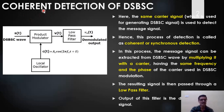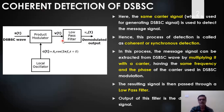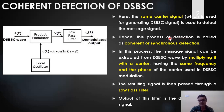This is the major requirement — the frequency and phase should be coherent with the transmitter carrier at all times. That is why this method is called coherent detection of DSBSC, or we also call this synchronized or synchronous detection.